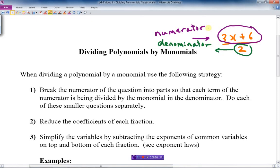These are the instructions: when dividing a polynomial by a monomial, use the following strategy. Number one: break the numerator of the question into parts so that each term of the numerator is being divided by the monomial in the denominator. Do each of these smaller questions separately. So in this example, 3x plus 6 is the numerator, and the numerator has two terms separated by plus signs and minus signs.